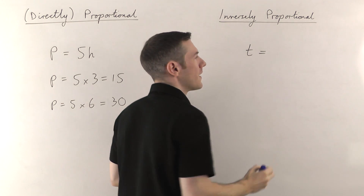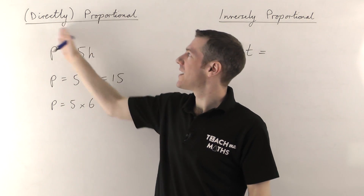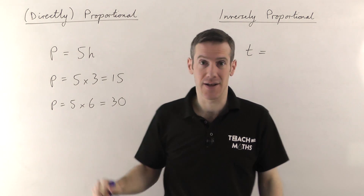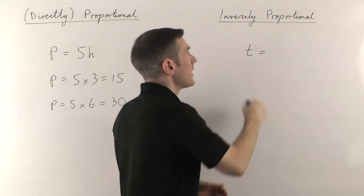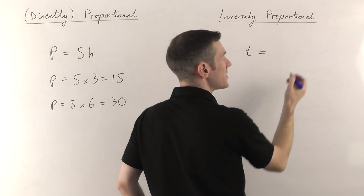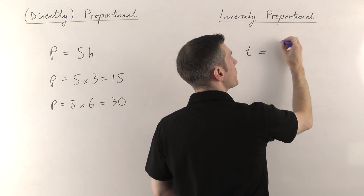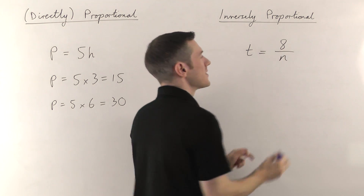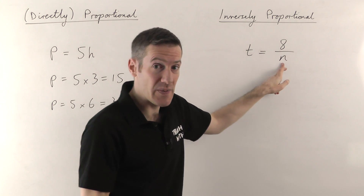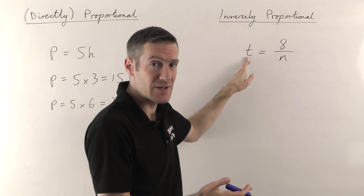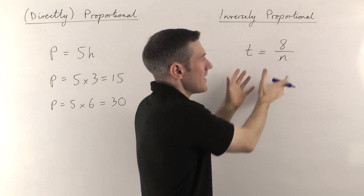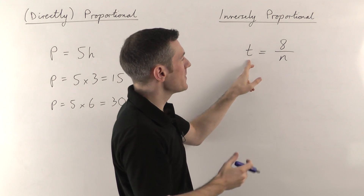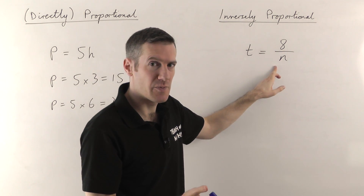With directly proportional, the equation is some number times the other thing. If it's inversely proportional, it'll be some number divided by the other thing. Let's say it's eight. So n is the number of people mowing the lawn, t is the time it takes, and because of the size of the lawn, the time it takes turns out to be eight divided by the number of people.